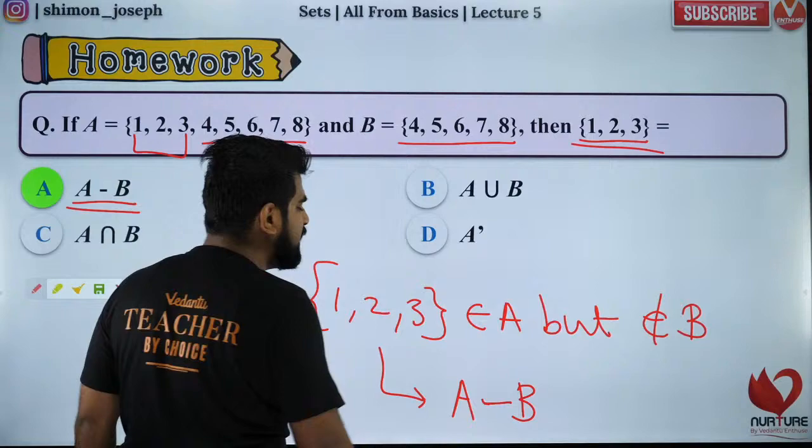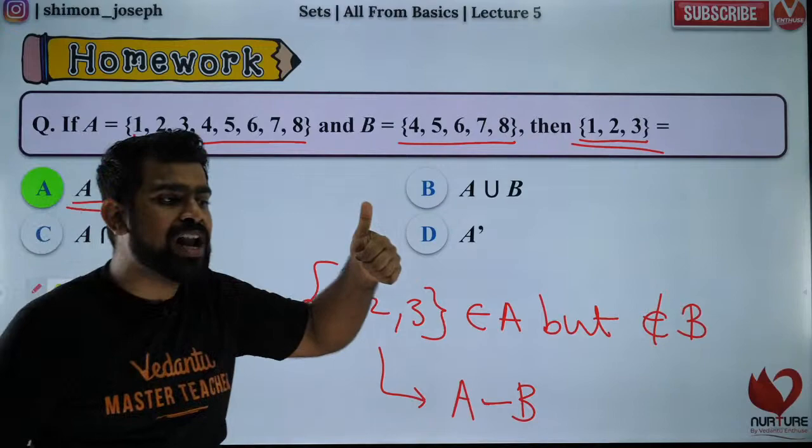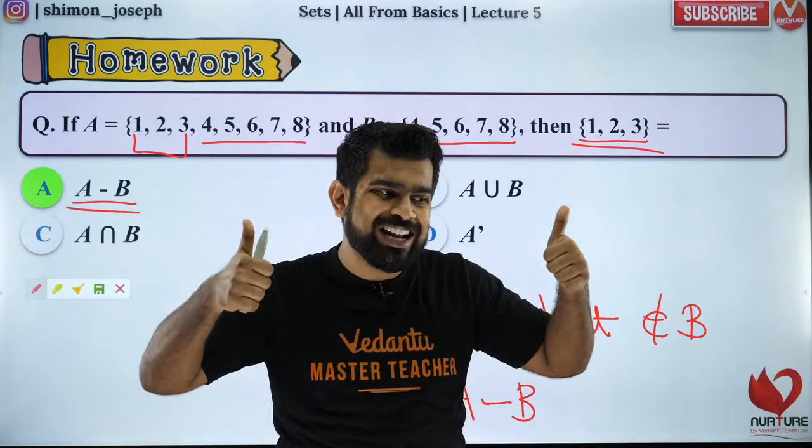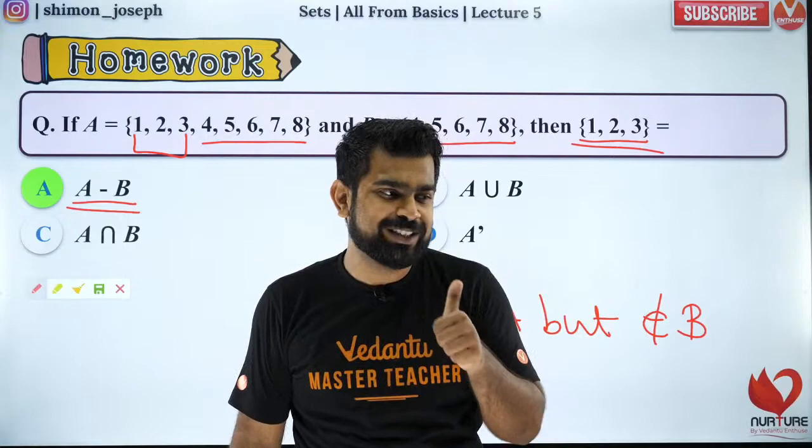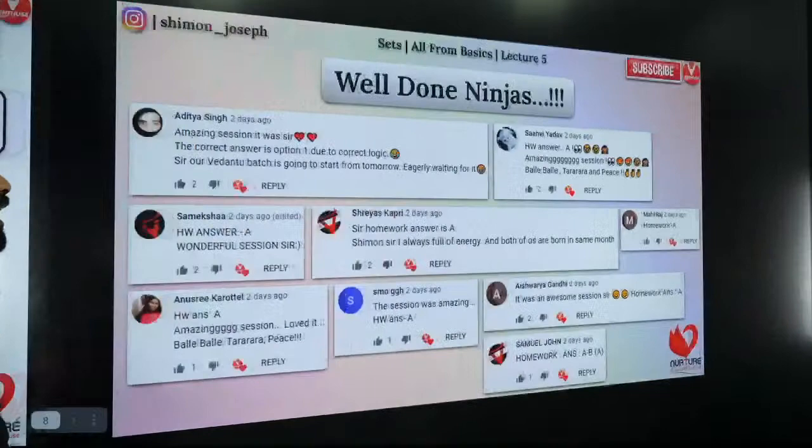The definition of A minus B is: elements present in A but not in B. Are you all clear with that? We got answers from a lot of people again — great job everyone. Hello Chris Cyrus, welcome, I hope your preparation is going well.